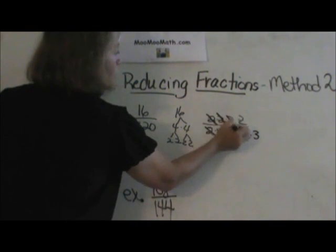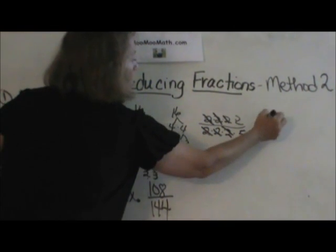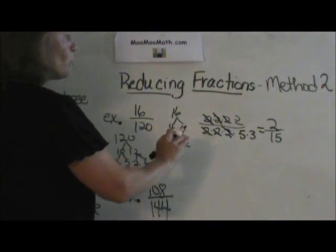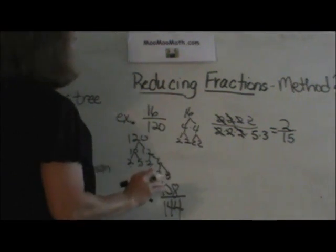I cancel common factors and I'm left with two over five times 3 or two-fifteenths. Let's go through the rules and then I'm going to come back and do a slow version.